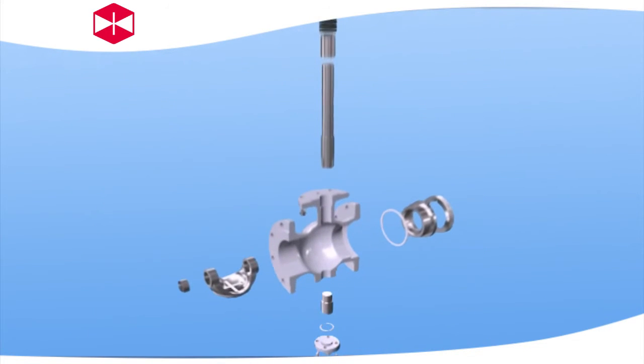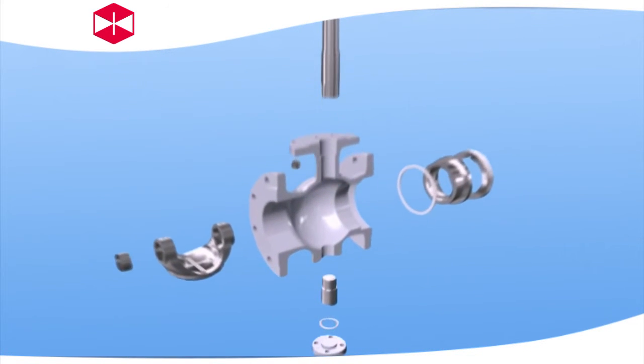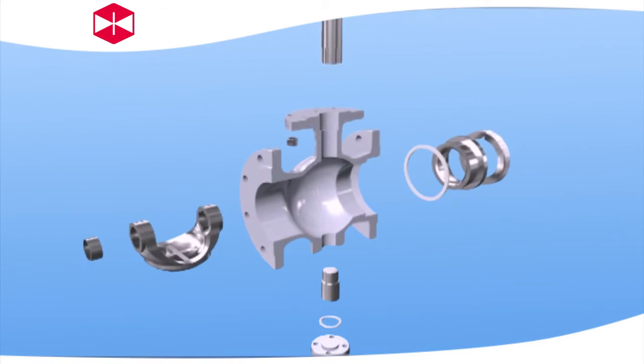Eccentric Half-Bow Valve has the following advantages. 1. Simple structure, convenient for manufacturing and maintenance.